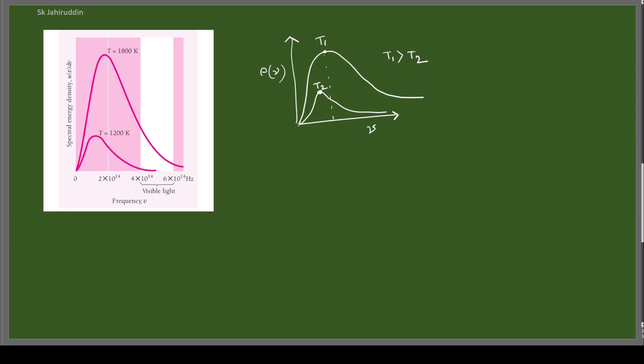The explanation of this curve is not easy — classical theory actually failed in explaining it. If you plot it in terms of wavelength, the characteristics remain almost the same, with T1 at higher frequency meaning lower wavelength. Higher temperature means higher energy.